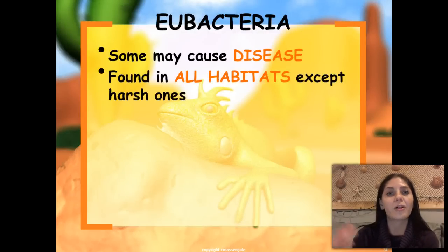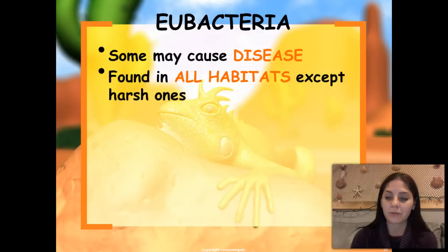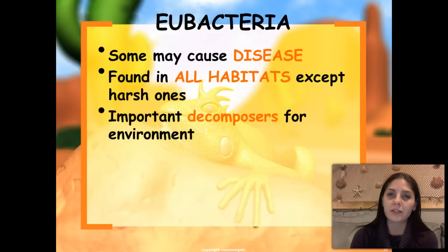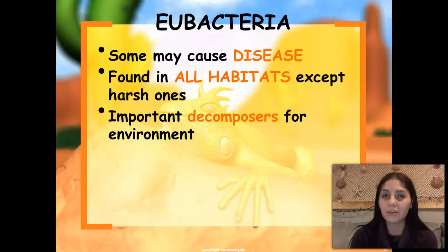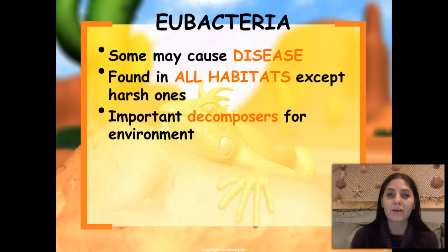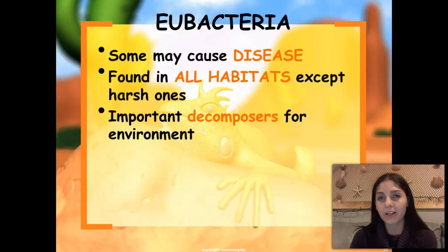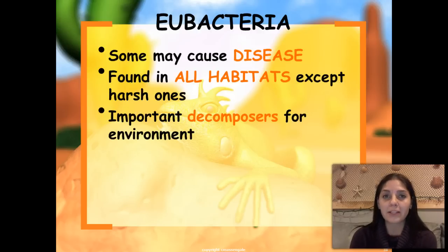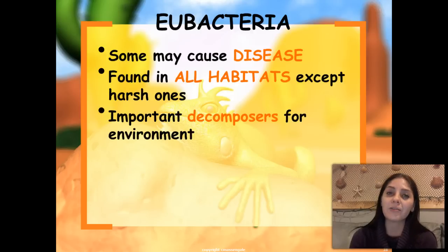The next domain is domain Eubacteria, and the only kingdom within it is kingdom Eubacteria. Some eubacteria can cause diseases, but a lot of them are actually helpful to us — they're found in things such as yogurt, milk, butter, cheese, and buttermilk. Some of them do cause diseases and make us really sick, and for that we'd want to get an antibiotic. 'Anti' means to get rid of, and 'biotic' means life.